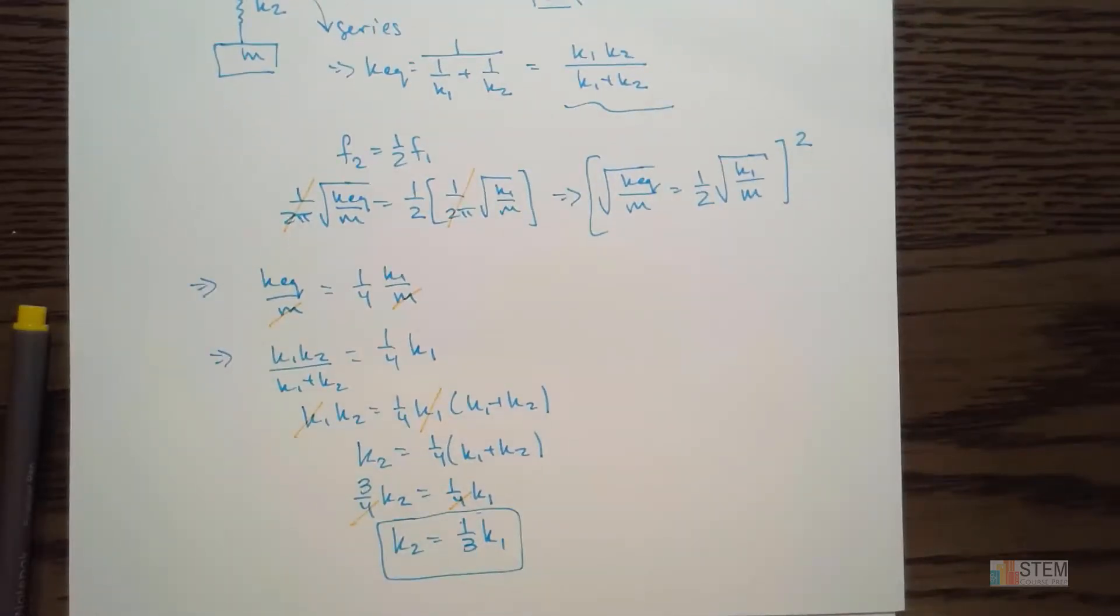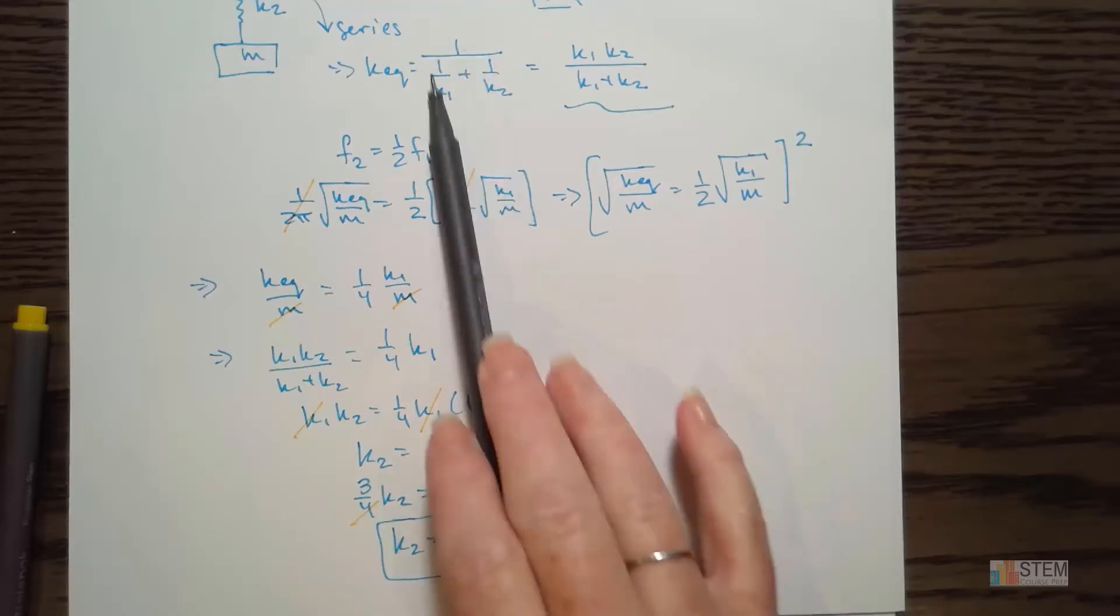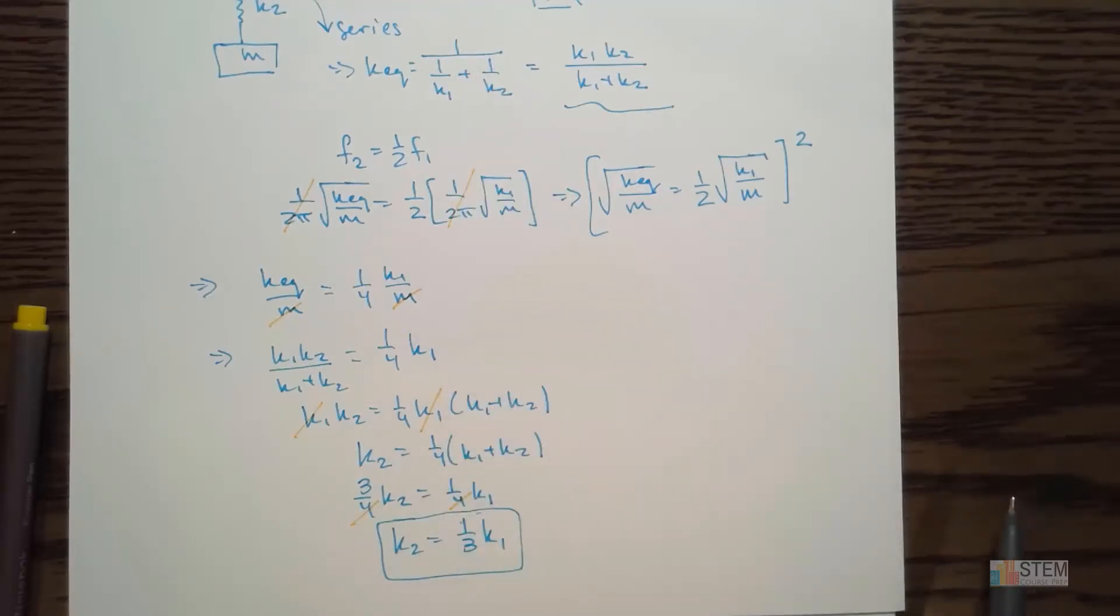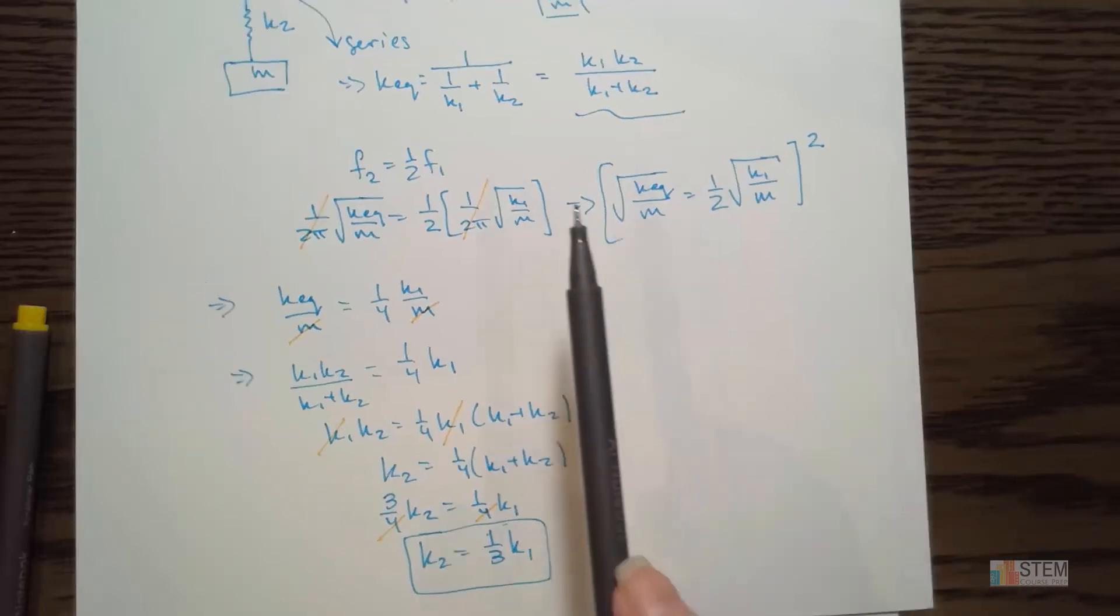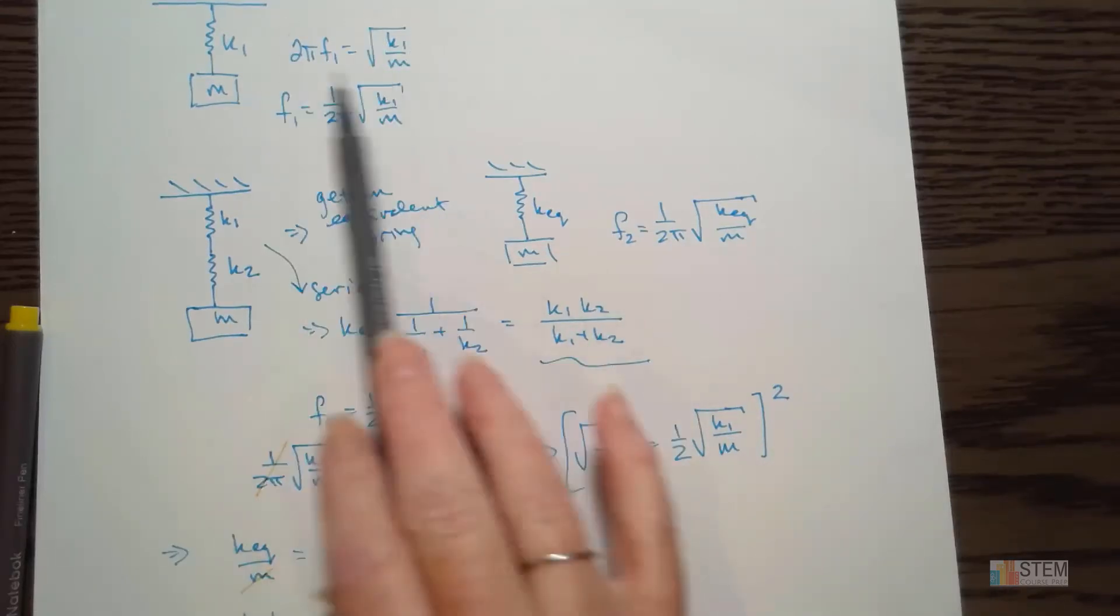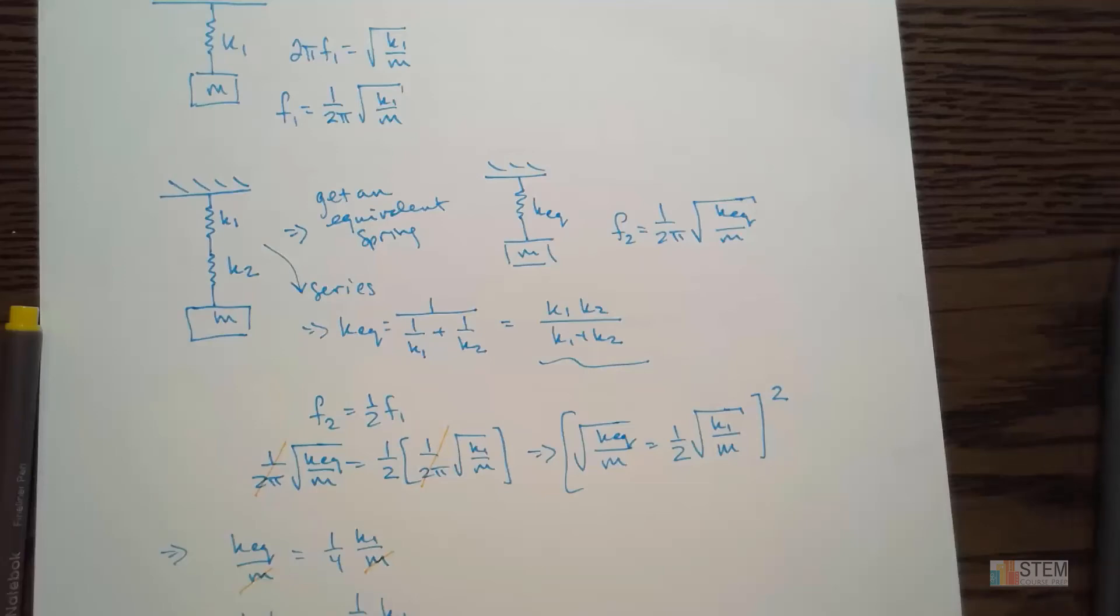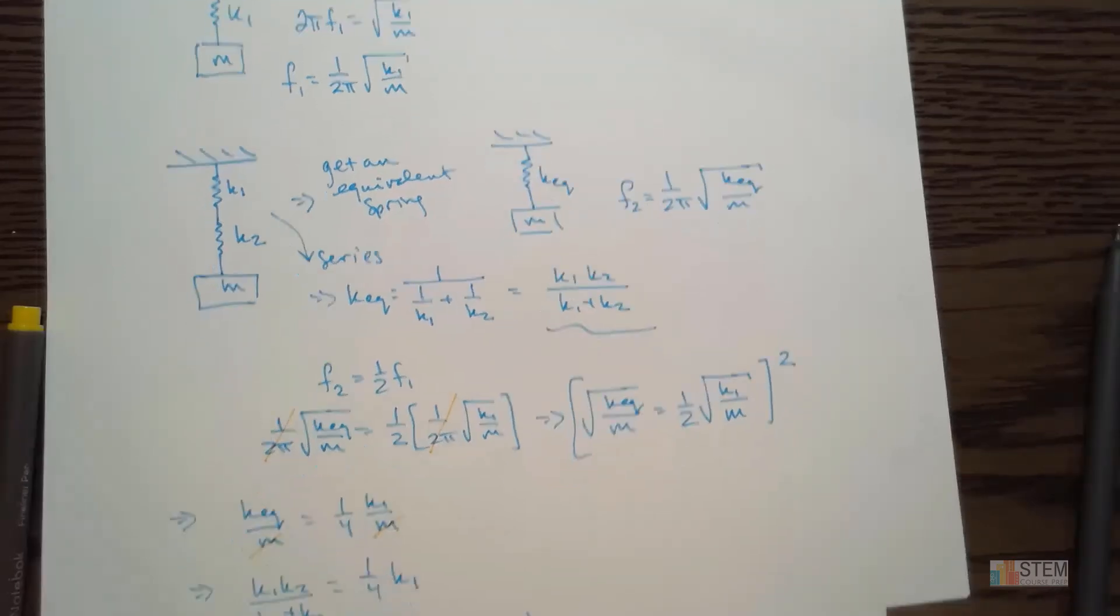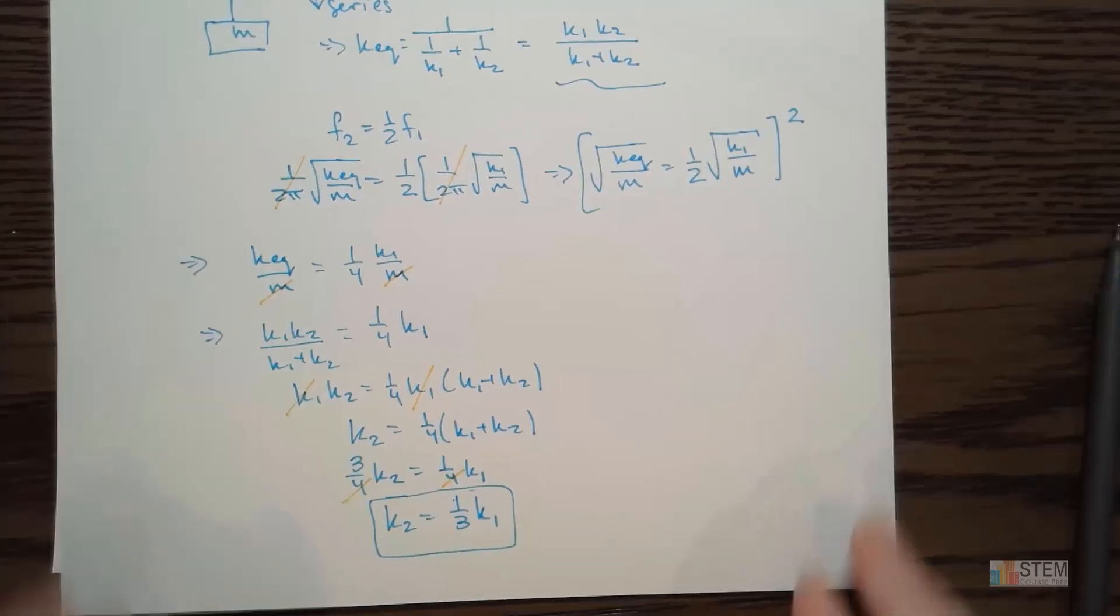Move that where you can see it. So that's how the spring constant is related. The spring constant of spring 2 is related to the spring constant of k1 if the natural frequency of that second system is going to be half of the original natural frequency. So key thing about this problem, to simplify it, was to do that equivalent k. Made it a lot easier. And we had to know about these equations here, those are just basic equations for a spring mass system. Hopefully you found that one helpful. And I will see you guys next time.